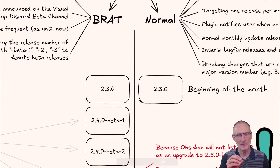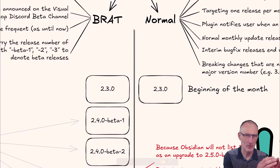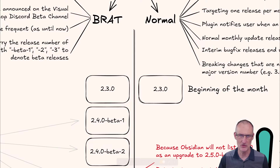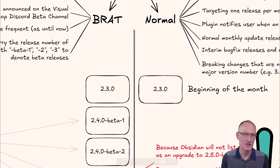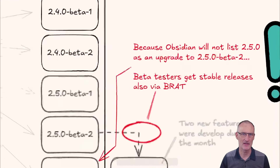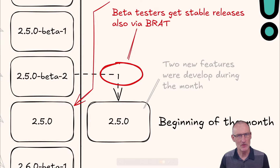Right now I'm going to be releasing 2.3.0, which will be released for both the BRAT beta testing channel and — since this is the beginning of the month — the normal channel as well. Then I will start working on 2.4.0, releasing beta 1, beta 2, etc. And when the end of the month comes I'm going to be releasing 2.5.0.